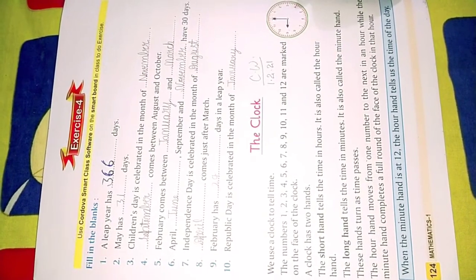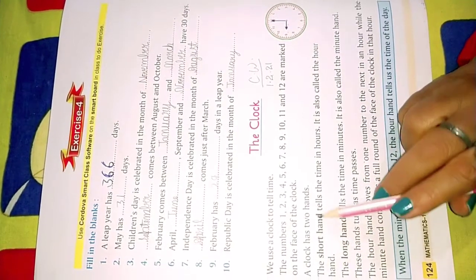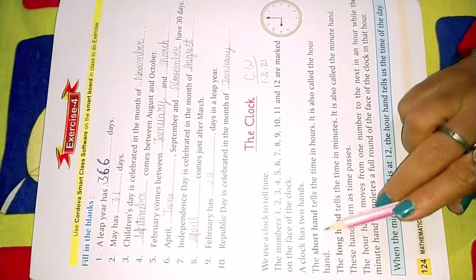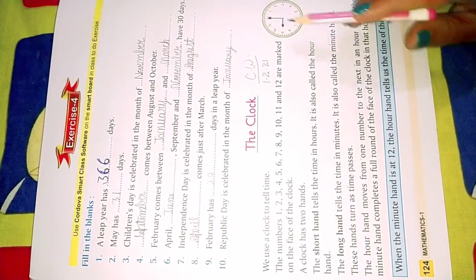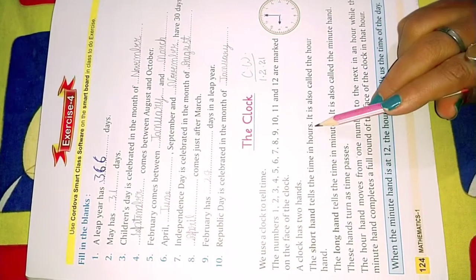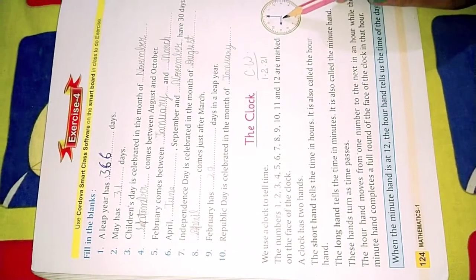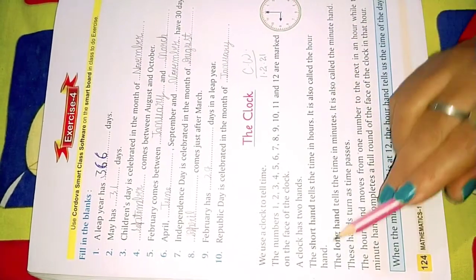A clock has two hands as I told you. A short hand - this one - which tells the time in hours. It is also called the hour hand.